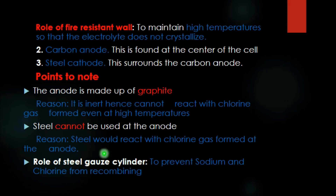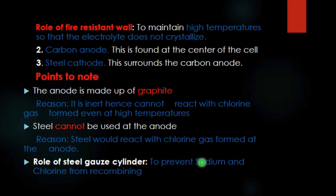Another component of the Down cell is the steel gas cylinder, also called the steel gas diaphragm. This is found between the anode and the cathode. Its role is to prevent sodium and chlorine from recombining — that is, from reacting with each other — by separating the anode and the cathode.